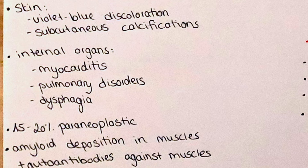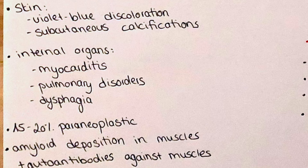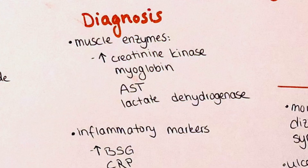Muscles of the internal organs are also involved — so smooth muscles — and we can have smooth muscle myocarditis. Different pulmonary disorders like alveolitis or pulmonary fibrosis may also be observed, and dysphagia can be a symptom as well. Approximately 15–20% of cases are thought to be of paraneoplastic origin. The pathogenesis involves amyloid deposition in the muscles as well as formation of auto-antibodies against the muscles.